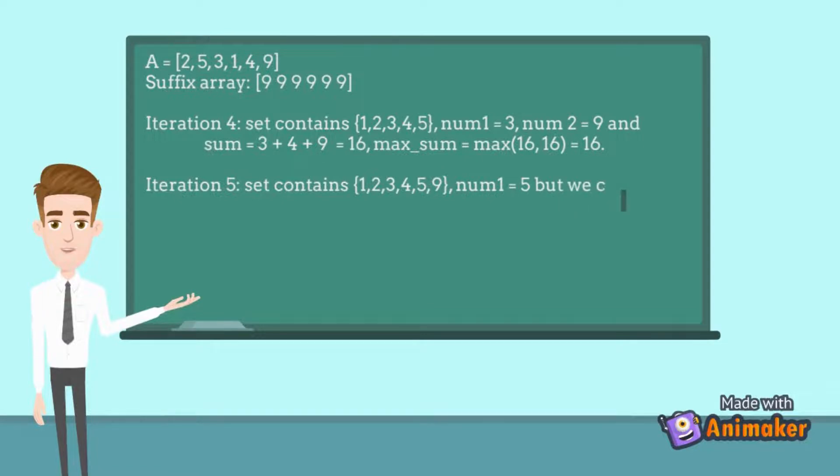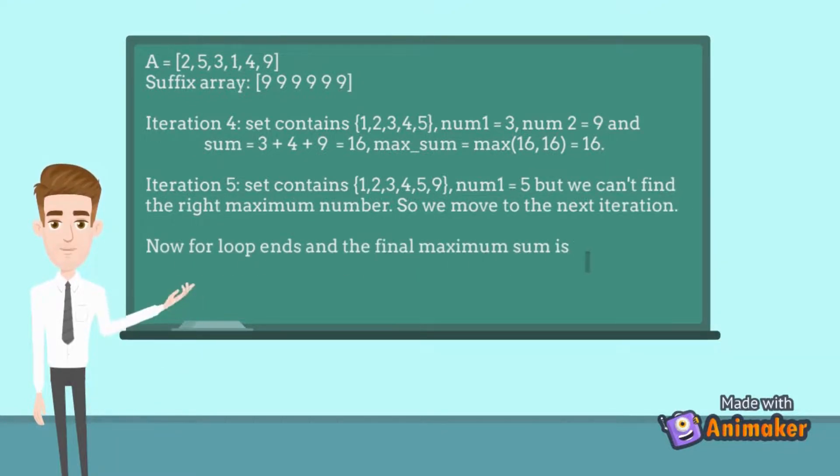For iteration 5, we cannot find the largest number from the right side, as the current element is 9, which is at the end of the array. So we move to next iteration. Now the for loop ends and we get the final answer is 16.